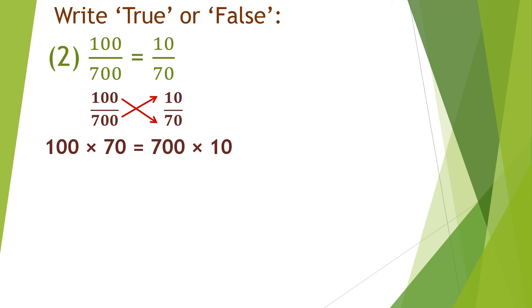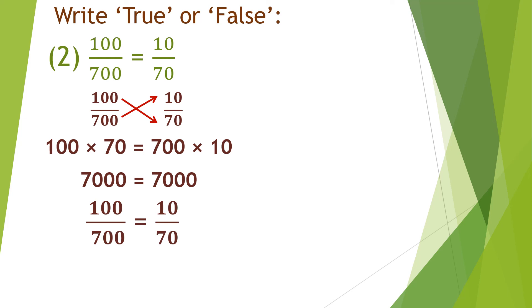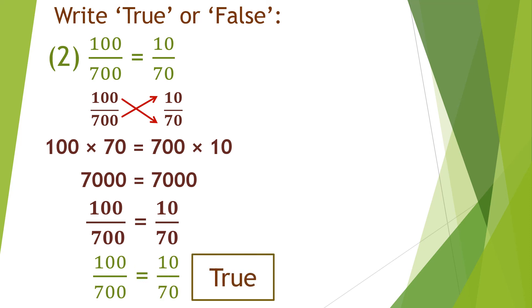100 multiplied by 70 is equal to 7000 and 700 multiplied by 10 is also equal to 7000. So what do you observe? 7000 is equal to 7000. So 100 upon 700 is equal to 10 upon 70 — that means this statement is true.